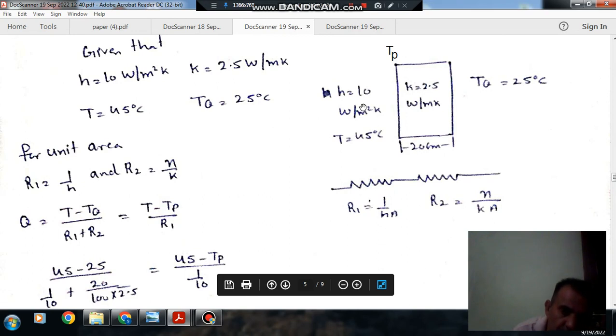The same heat is transferred to the wall by the fluid. Heat transfer can also be written as T minus TP divided by R1. Heat is going from fluid to wall and wall to the other surface.